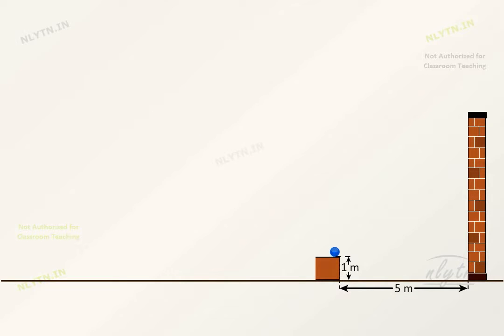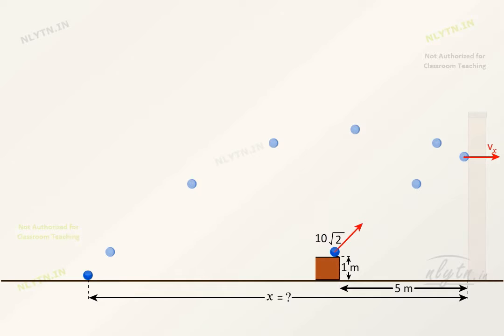The situation given to us is like this and we are supposed to find this distance. First, note that by elastically we mean that the component of velocity perpendicular to the surface is just reversed in direction without altering its magnitude.